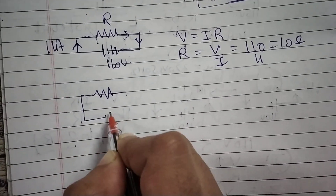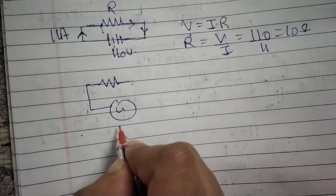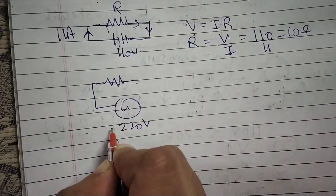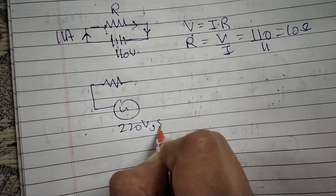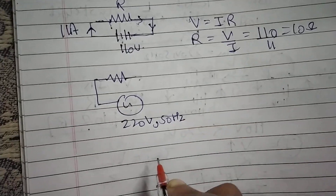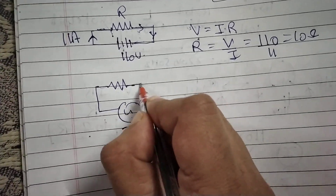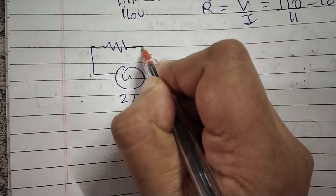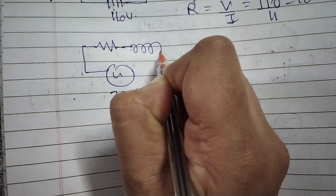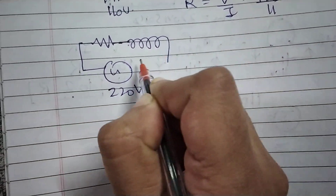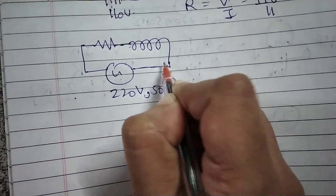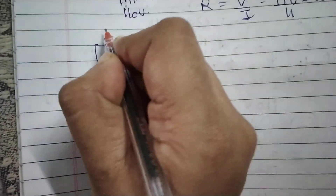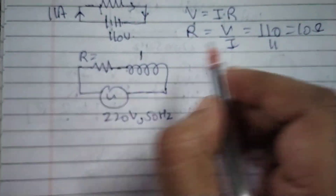Now they have asked us to apply this bulb to a 220 volt, 50 hertz AC source. We have to use this bulb with a coil placed in series with it.